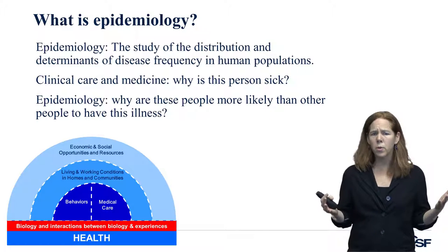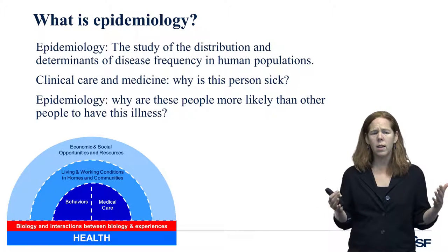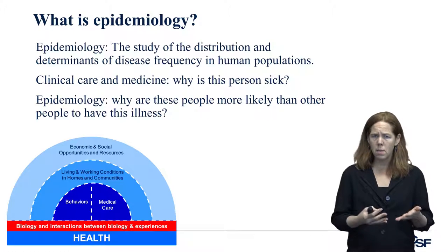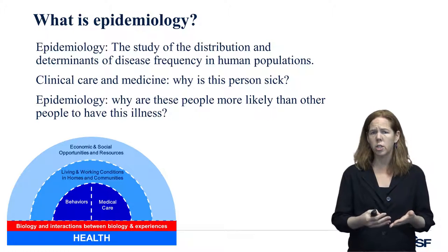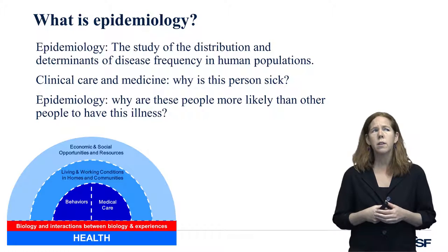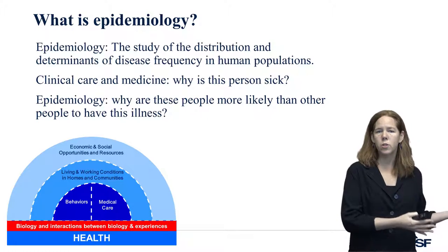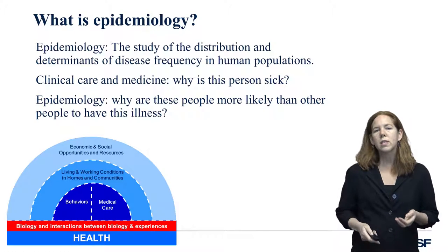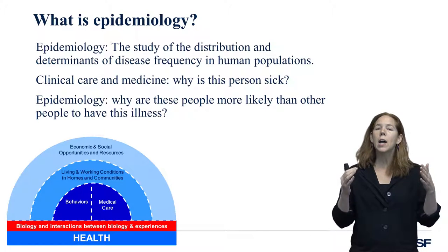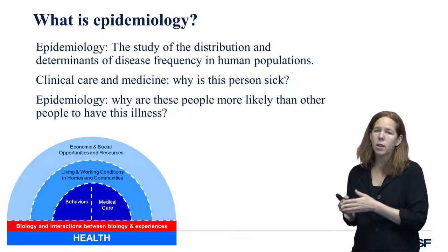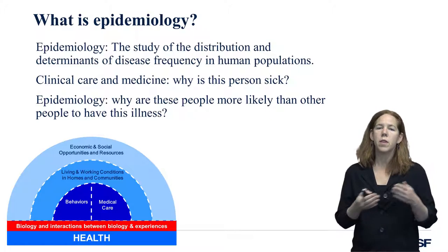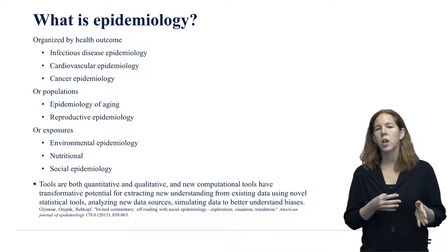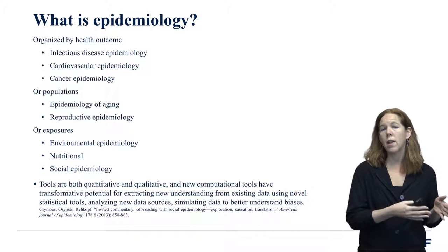It's helpful to contrast epidemiology with medicine or clinical care, because a lot of people think if they really want to improve population health they should become a physician or a clinician. Clinical care thinks about why is this individual sick and what made this person ill, whereas epidemiology thinks about why is this group of people at higher risk of becoming sick rather than this other group. Epidemiologists often organize themselves based on particular outcomes because it's important to understand the biology of particular diseases.